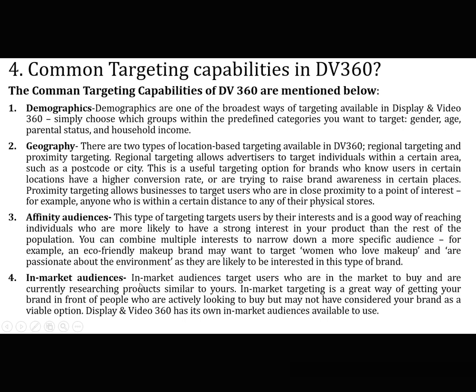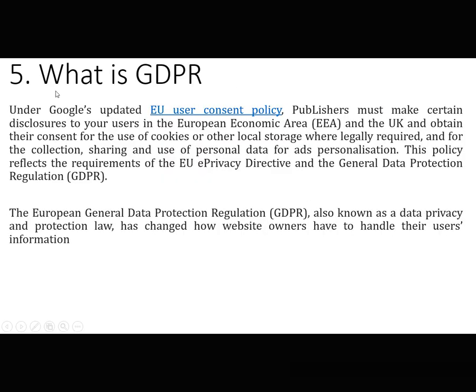For example, an eco-friendly makeup brand may want to target women who love makeup and are passionate about the environment, as they are likely to be interested in that type of brand. The fourth targeting option is In-Market Audiences, which targets users who are in the market to buy and are currently researching products similar to yours. In-market targeting is a great way to get your brand in front of people who are actively looking to buy. DV360 has its own in-market audiences available to use.